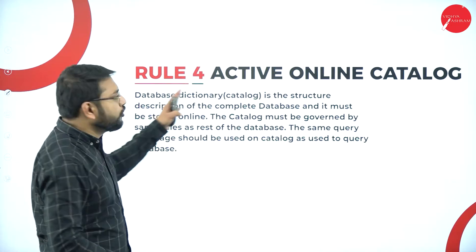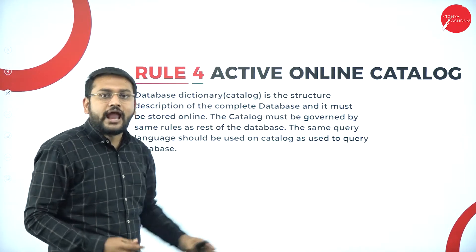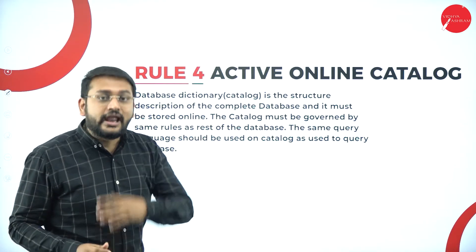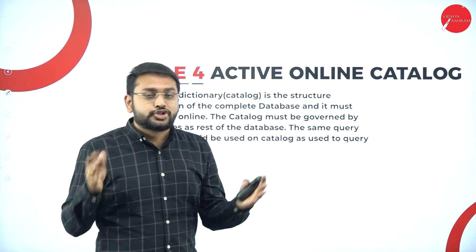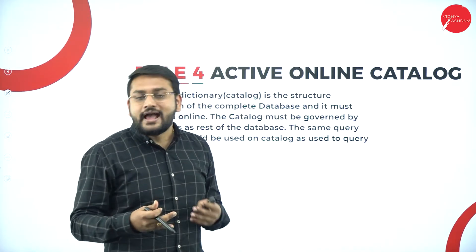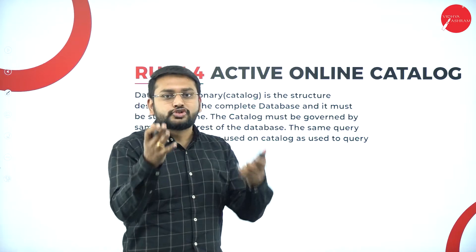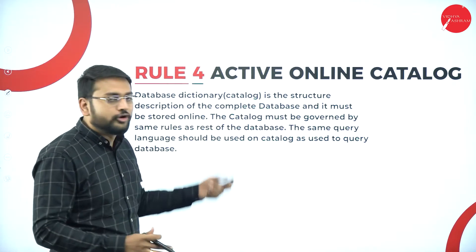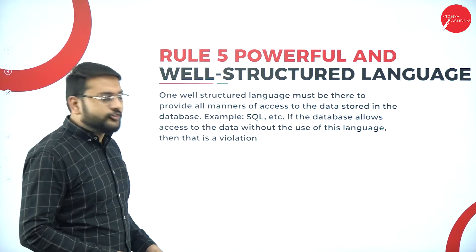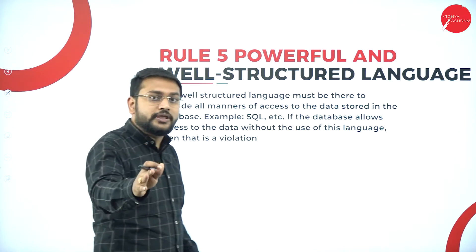The same meaning should be retained for null consistently — that is Rule Number Three. Moving forward to Rule Number Four: Active Online Catalog. A catalog contains metadata — data about the data — and that should be accessible online. I should be able to access the data dictionary of the database online; that is what Rule Number Four says.